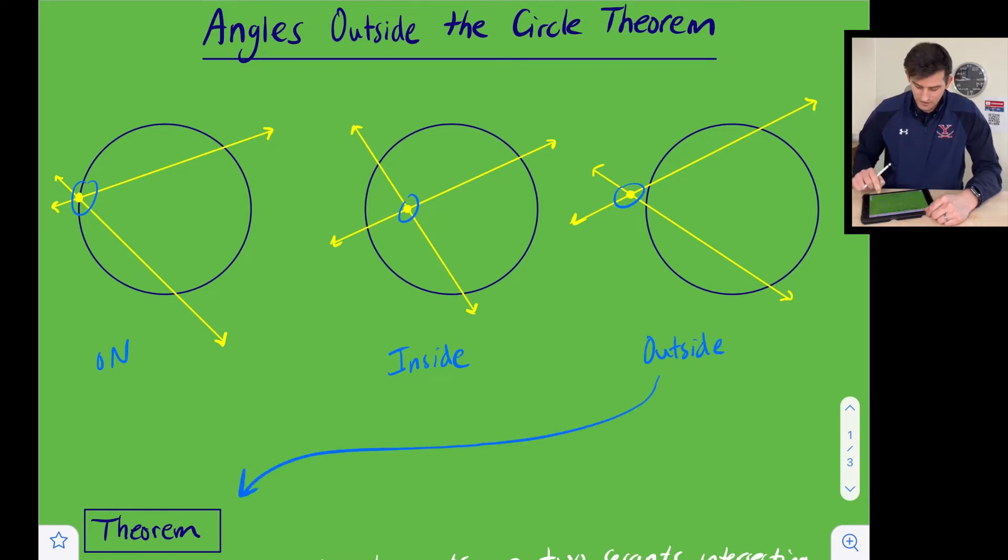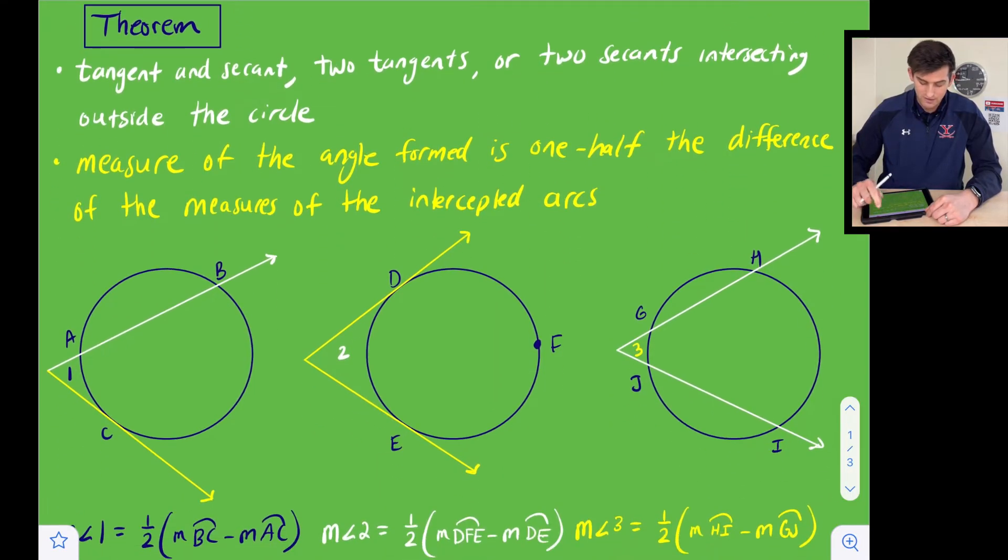So let's talk about our theorem and let's look at some examples and solve some problems. Our theorem just states that we could have really three instances here. We could have a tangent and a secant that are intersecting, we could have two tangents that are intersecting, or we could have two secants that are intersecting, and they're going to intersect outside the circle.